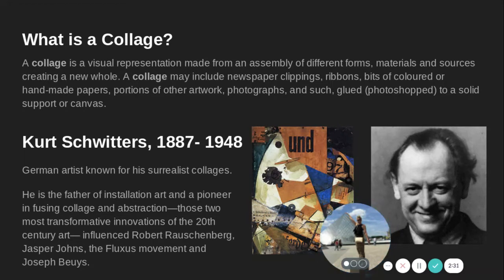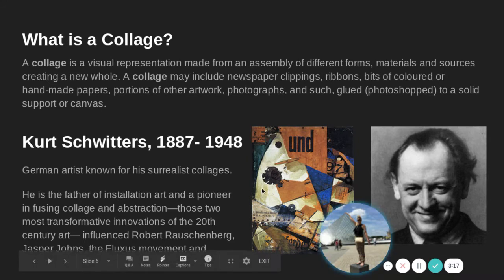Here is another surrealist artist, Kurt Schwitters. He lived from 1887 to 1948. He was a German artist known for exactly what we're doing — surrealist collages. He is the father of installation art and a pioneer of using collage and abstraction, the two transformative innovations of the 20th century. He influenced a lot of other artists, and one in particular is Jasper Johns — we did an American flag mosaic inspired by Jasper Johns. Jasper Johns is still living and is one of the most highly celebrated American artists, and he was influenced by this German.